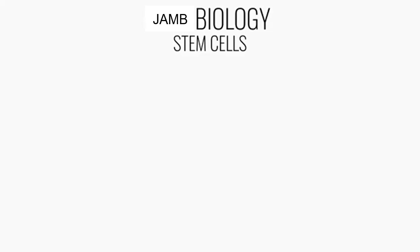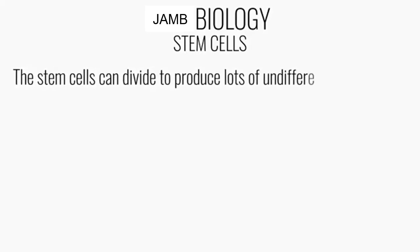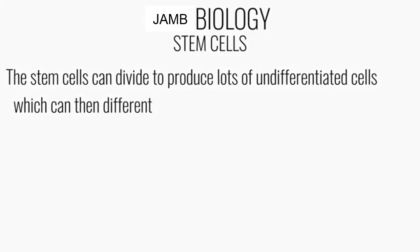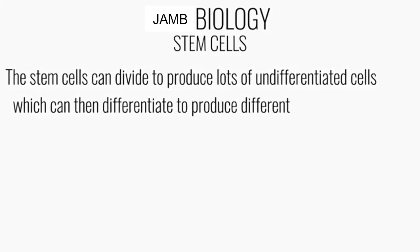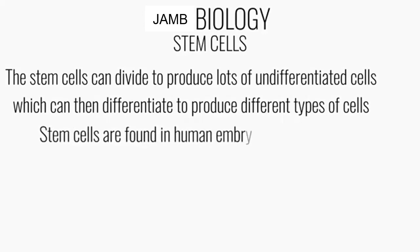These stem cells can divide to produce lots more undifferentiated cells, which can then differentiate to produce different types of cells. Stem cells are found in human embryos.